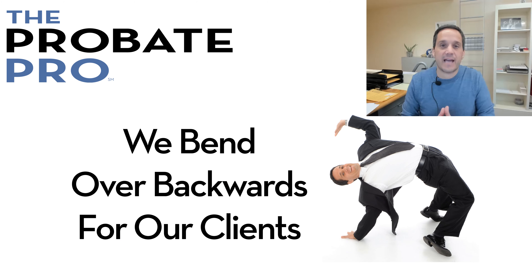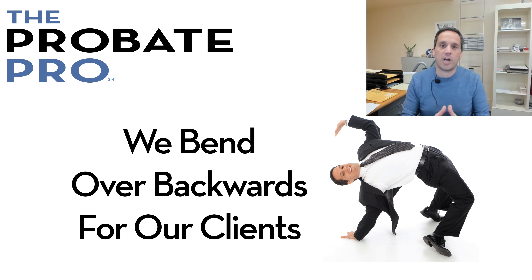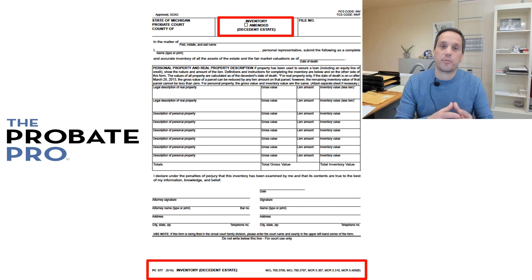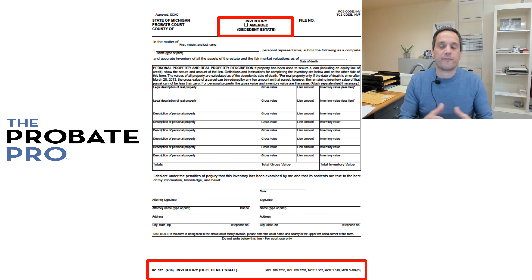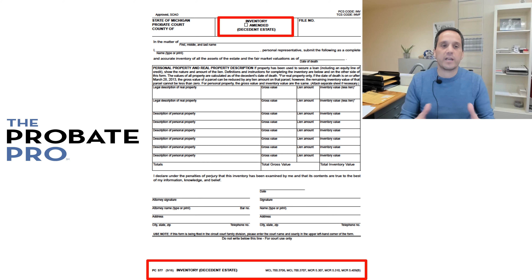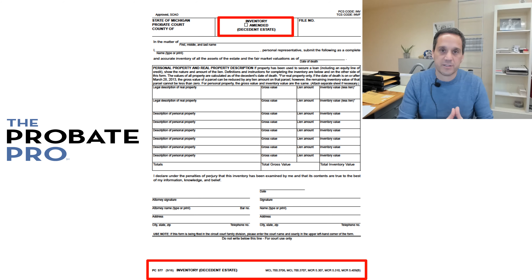We're going to walk step by step through form PC-577, that is a state court administrator form for the preparation of the required inventory. This form is required under both Michigan statute as well as Michigan court rule. We strongly urge you to use an experienced, competent probate lawyer when completing this form and to refer to the statutes and court rules. We're going to explain how this form works, specifically how you complete it, and what the rules are relating to service.